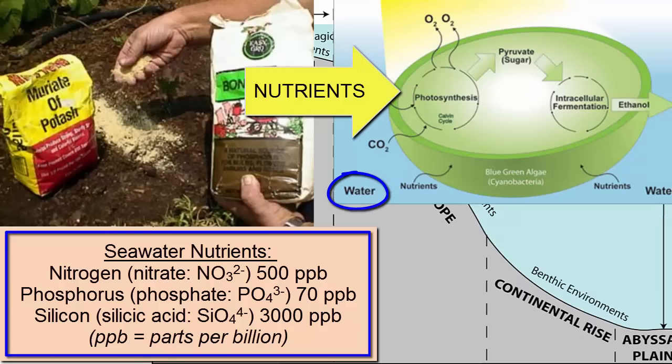In the oceans, autotrophs are surrounded by water, and they can absorb the nutrients they need from this water directly. However, the nutrients need to actually be in the water.